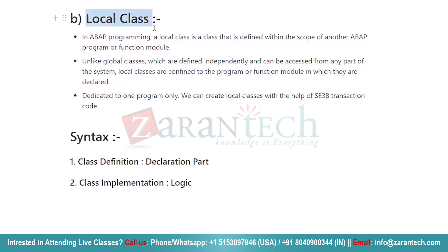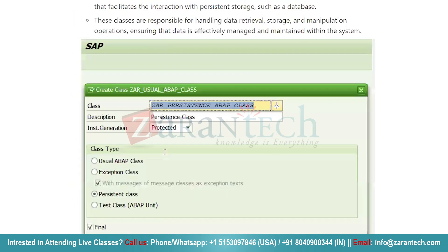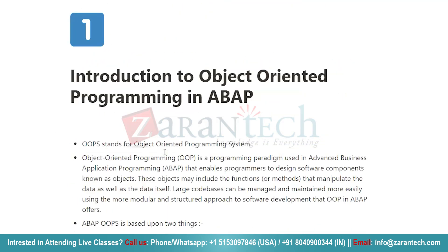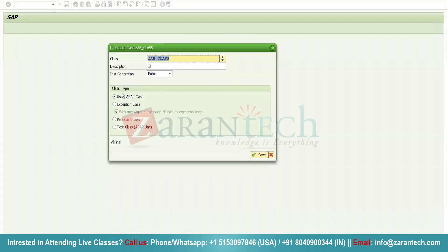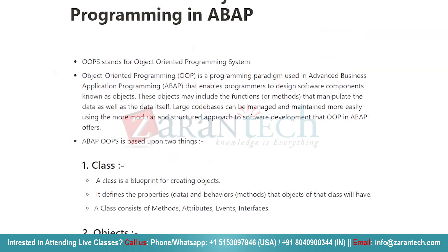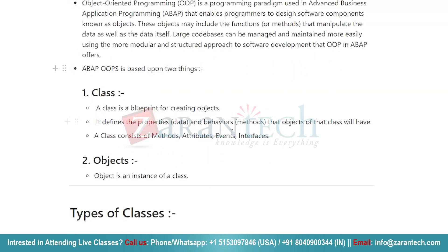The syntax for creating local classes uses CLASS...DEFINITION to declare the class, then CLASS...IMPLEMENTATION for writing the class logic, and then you create an object to call all of its methods. This is all about ABAP object-oriented basics. Object-oriented programming is typically based on two things: class and object. A class is nothing but a blueprint used for creating similar kinds of objects, and objects are nothing but instances of a class. Thank you very much.